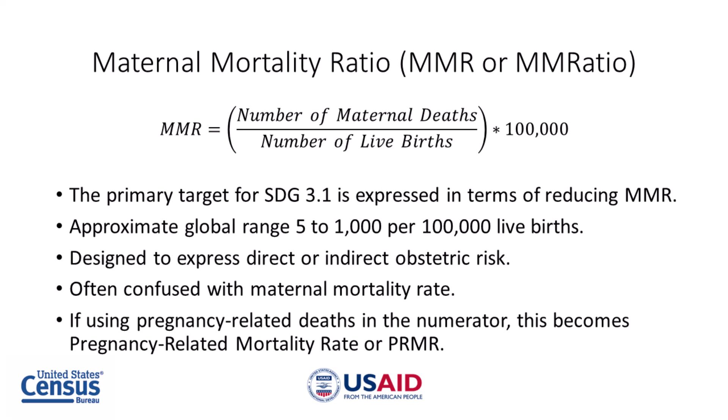The first indicator is maternal mortality ratio, or MMR — you may also see it written as MM ratio. The MMR is the number of maternal deaths in a given time period divided by the number of live births during the same period, usually multiplied by 100,000. This is the most common measure of maternal mortality. The primary target for the third sustainable development goal is expressed in terms of reducing MMR. The approximate global range is from 5 to 1,000 per 100,000 live births. By expressing maternal deaths per live birth rather than per women of reproductive age, the MMR is designed to express obstetric risk.